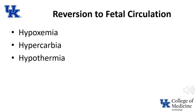The previously described changes occur in most term births. They are less likely to occur in the presence of prematurity, especially in circumstances of extreme prematurity. Even if the changes do occur in the normal manner, there is the potential for reversion to fetal circulation. Hypoxemia, hypercarbia, and hypothermia can produce increased pulmonary vascular resistance, which results in elevated pulmonary artery pressure, decreased pulmonary blood flow — which exacerbates hypoxemia — and right-to-left shunting through the ductus arteriosus and the foramen ovale. One of the problems in this circumstance is that decreased pulmonary blood flow results in further hypoxemia, which exacerbates the problem.